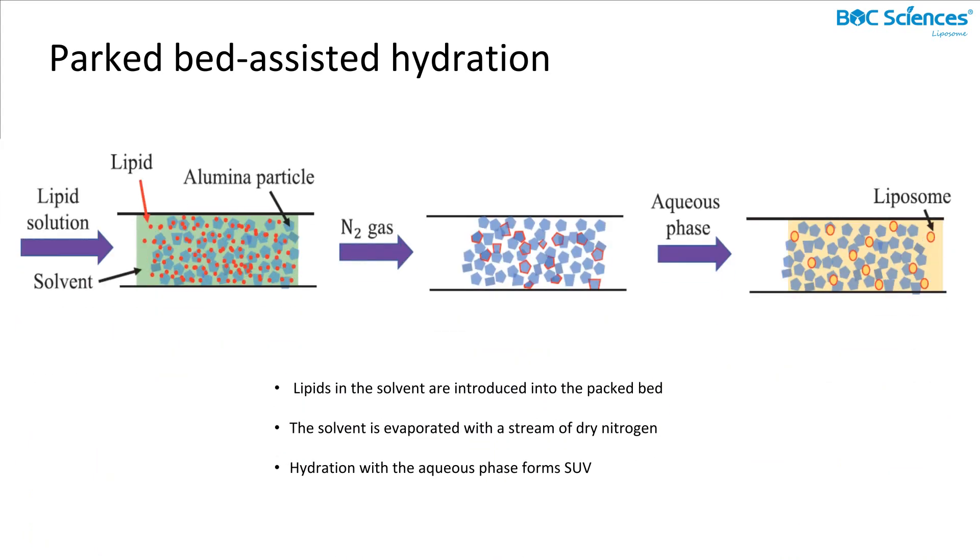Eighth, packed bed-assisted hydration. In using this strategy, lipid in a solvent is introduced into the packed bed, where the solvent is evaporated with a stream of dry nitrogen, and finally, SUVs are formed by hydrating with an aqueous phase.